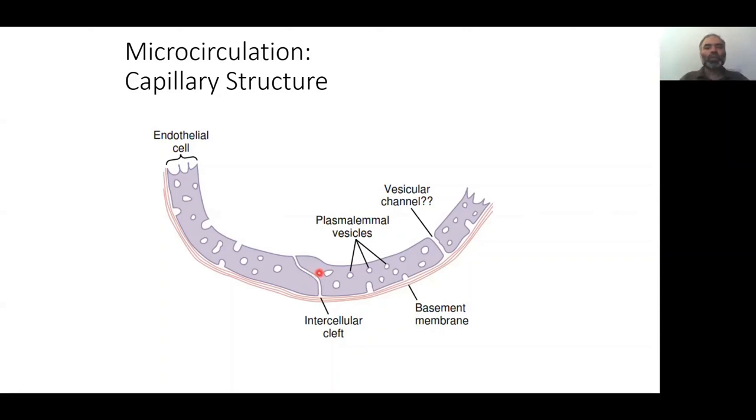Somewhere in between is the GIT. In the GIT, the vessels are between the brain's tight junctions and the liver's broad tracks between cells. The GIT is in between to absorb all the nutrients and water.